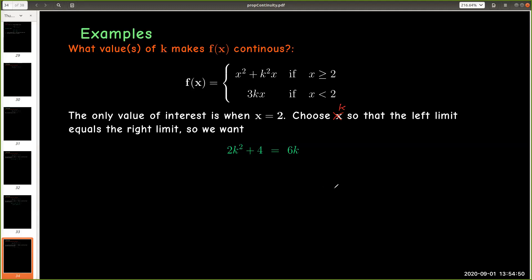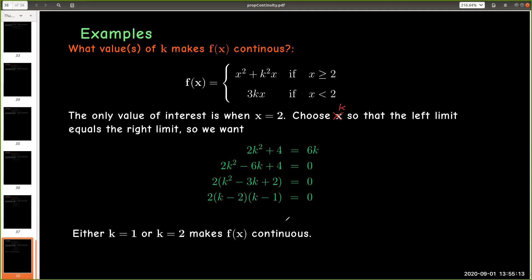Now it's just an algebra problem. I have a quadratic equation in k. So let me go through the steps: make one side 0, factor out the common factor of 2, factor the resulting quadratic on the inside. And that gives me the result that the left limit will equal the right limit when either k equals 1 or k equals 2, and that in turn makes f of x continuous.